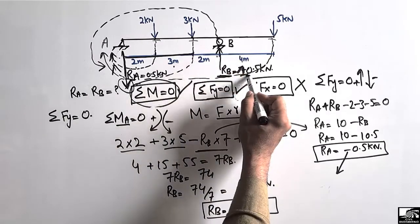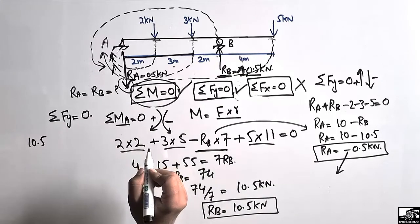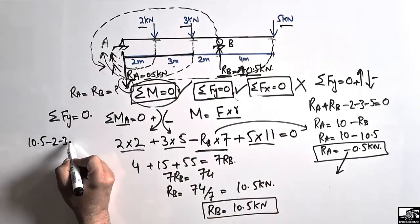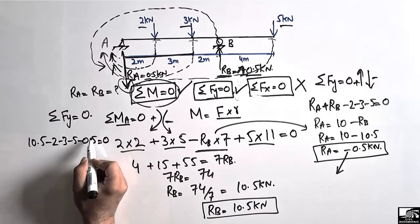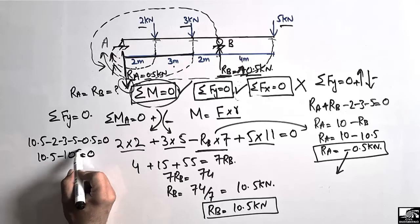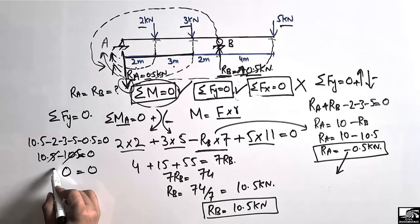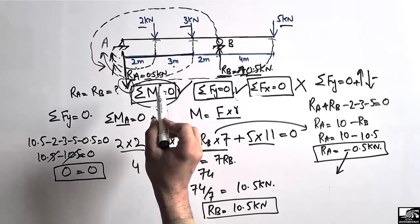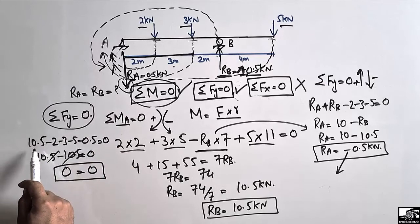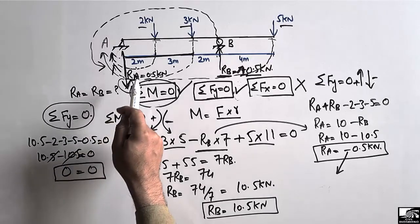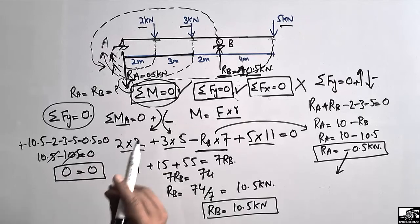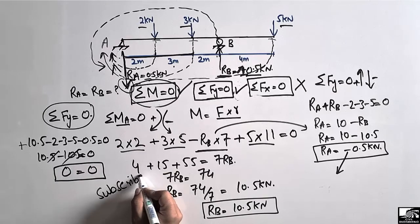To verify our results, the summation of all upward and downward forces should equal zero. The only upward force is RB = 10.5 kN. The downward forces are 2 kN, 3 kN, 5 kN, and 0.5 kN, totaling 10.5 kN. So 10.5 − 10.5 = 0, which confirms our support reactions are correct. Hope you guys understand, and don't forget to subscribe for more civil engineering videos. Thank you for watching.